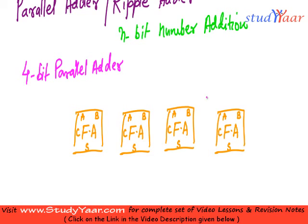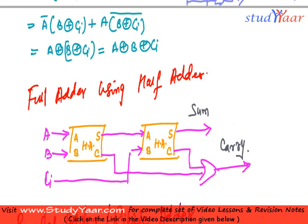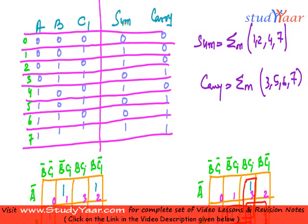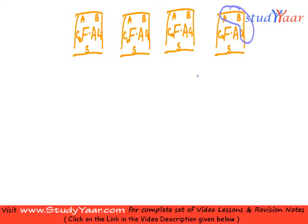Now let me show you how we are adding a 4-bit number. This is the carry out, and we have a carry in over here. The carry out of one adder connects to the carry in of the next. In a full adder, I have 3 inputs: A, B, and carry-in (CI), and 2 outputs: sum and carry out.